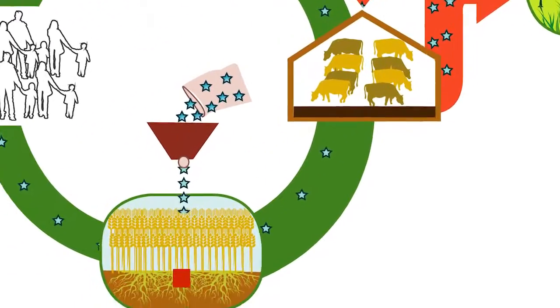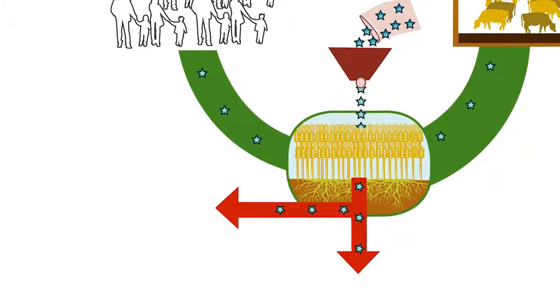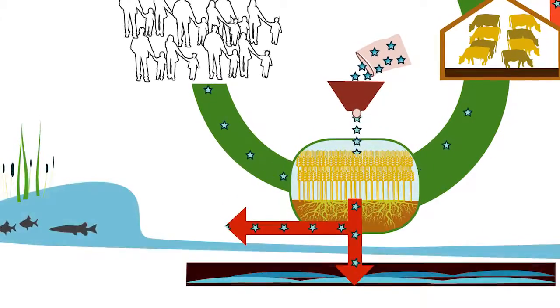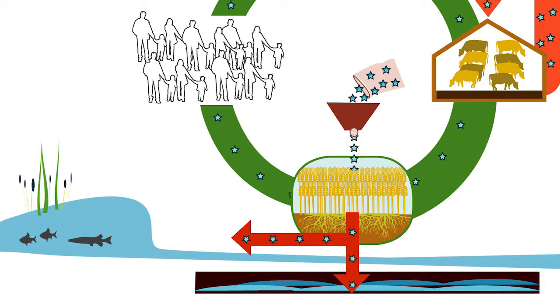The system also leaks into the soil. Nitrogen that cannot be absorbed by farm crops ends up in the groundwater, streams and rivers, where it is unwanted.